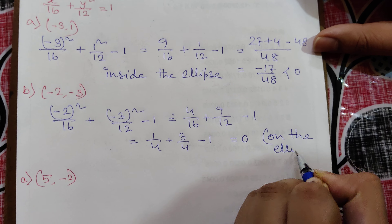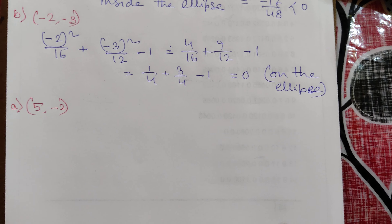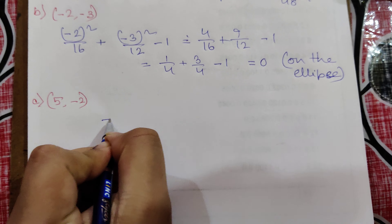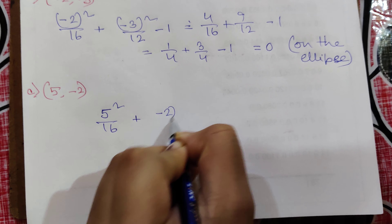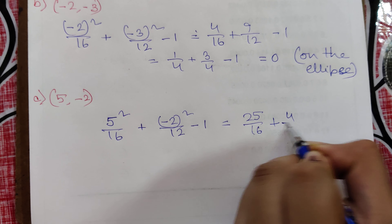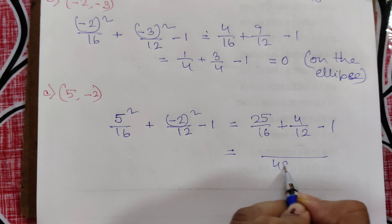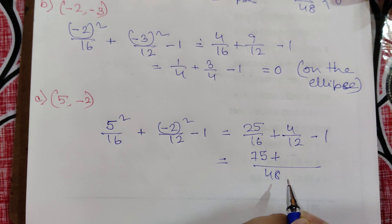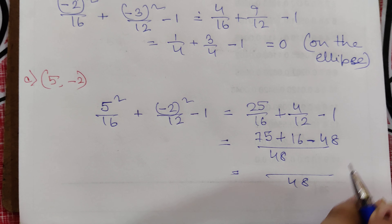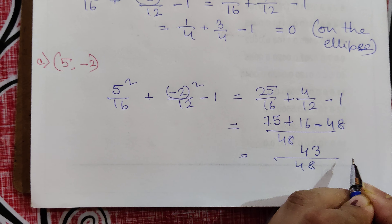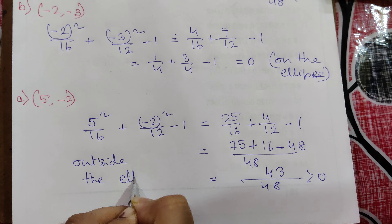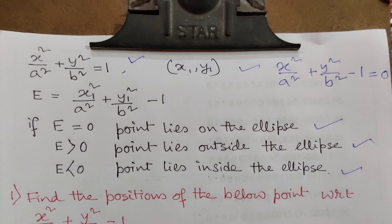Moving on to the last example, the point (5, -2): x1 = 5 and y1 = -2. Substituting: 5 squared by 16 plus (-2) squared by 12 minus 1, which gives 25 by 16 plus 4 by 12 minus 1. Taking LCM as 48: 75 plus 16 minus 48 = 43 by 48, which is greater than 0, so the point lies outside the ellipse. This is how we can measure the position of a point with respect to an ellipse.